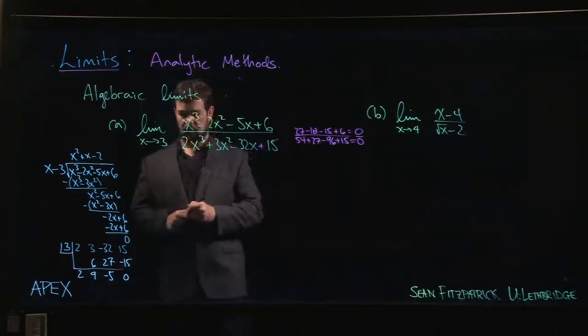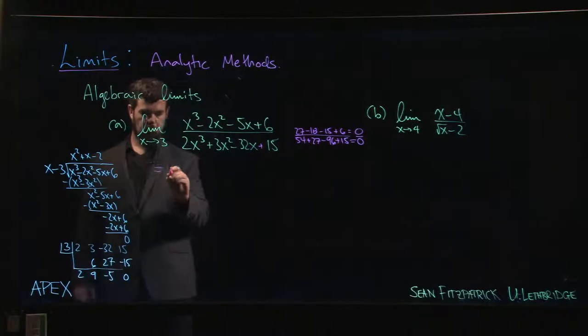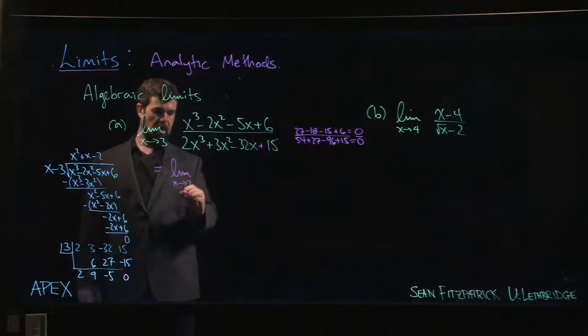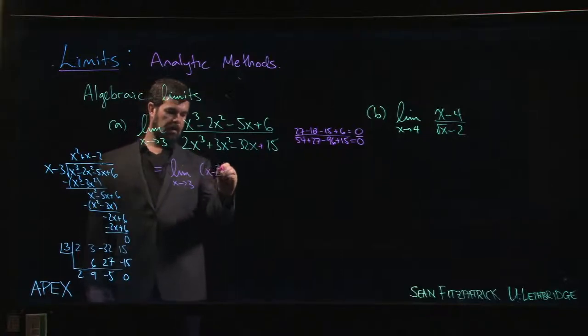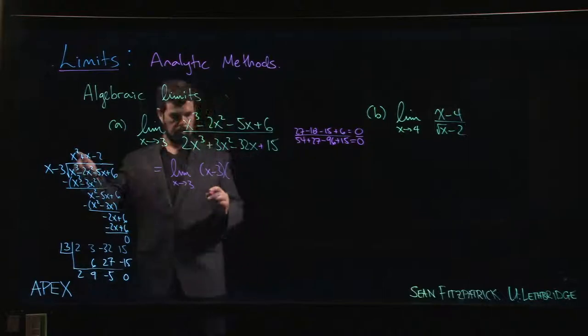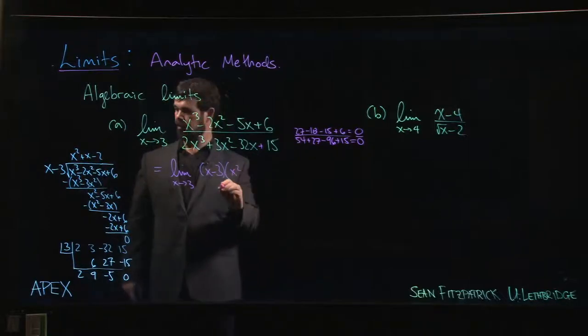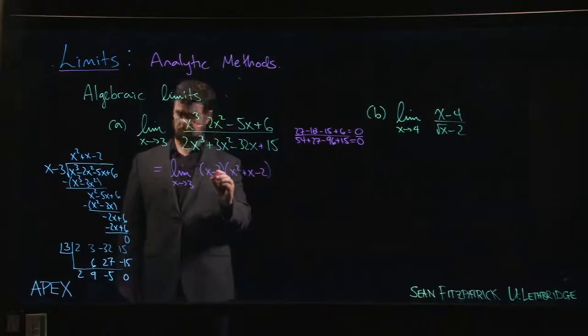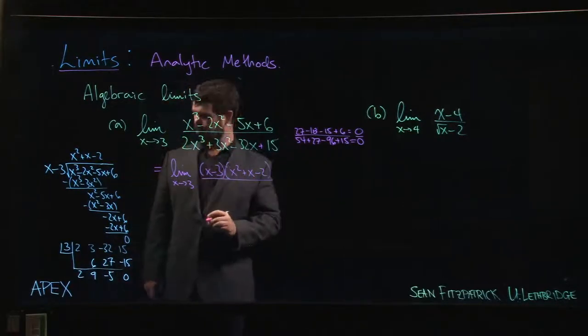All right, so we say okay, this is going to be the limit as x goes to 3. So on top, x minus 3, so I did the long division ahead of time. x squared plus x minus 2 is the factor once you take out the x minus 3 for the numerator. For the denominator...